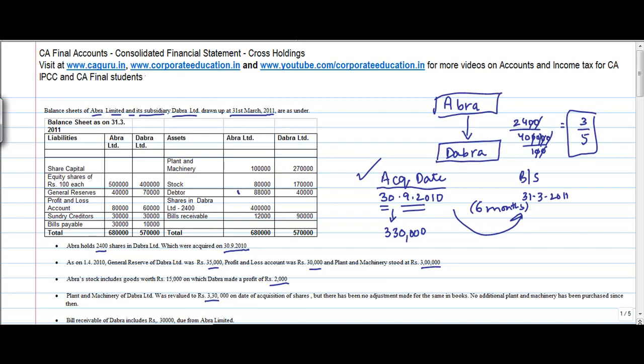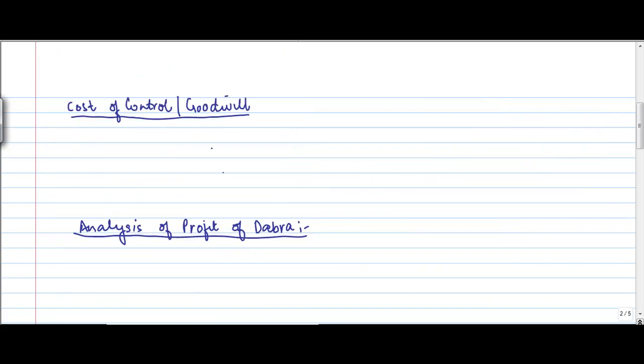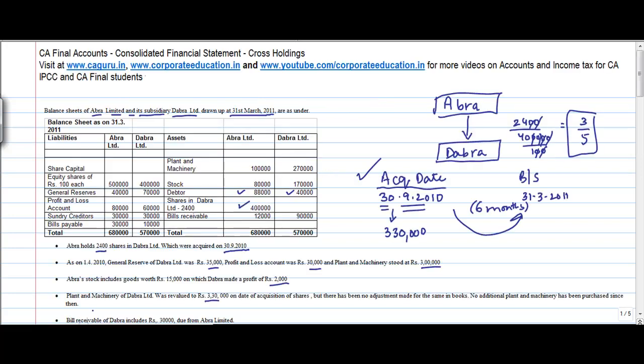Then shares in Dabra, okay so this one is done. Shares in Dabra, 4 lakh. Now this amount which is investment, where does it goes? It goes to the cost of control. So cost of control, the investment value or the amount I have paid for these shares is 4 lakh rupees. So I have moved it from here and I have put it there. So one removal, one addition.